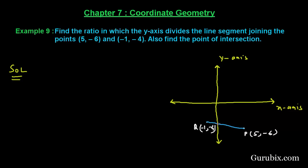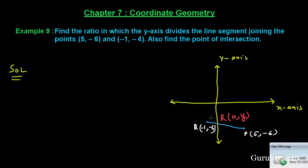Suppose we denote the intersection point by R. The coordinates of R will be (0, y), because on the y-axis the x-coordinate is always 0. Therefore, we have to find the ratio in which the y-axis divides the line segment joining P(5, -6) and Q(-1, -4).